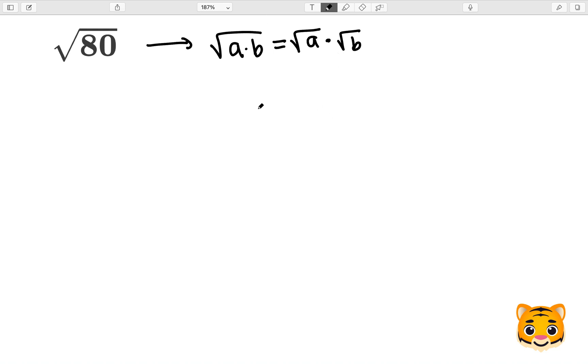To apply this to the square root of 80, we first need to come up with factors of 80. I'm going to use 16 and 5 as my factors of 80 because 16 is a perfect square, and having a perfect square will allow us to simplify in the future.